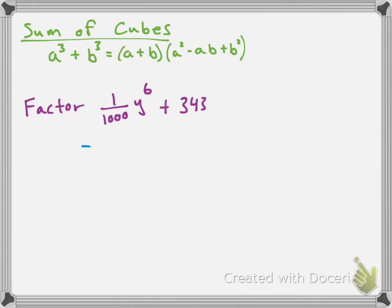So I'm going to rewrite that whole term as 1 over 10 y squared all to the power of 3. Because 1 tenth to the power of 3 is 1 over 1000, and y squared to the power of 3 is y to the power of 6. And 343 can be rewritten as 7 to the power of 3. So that's plus 7 to the power of 3.